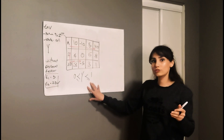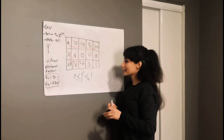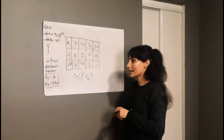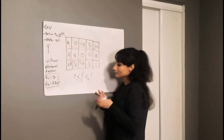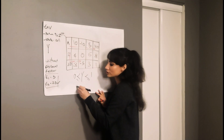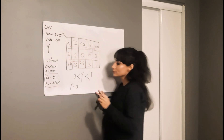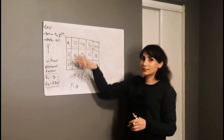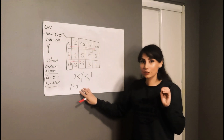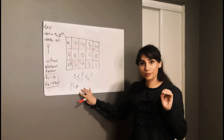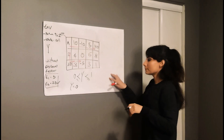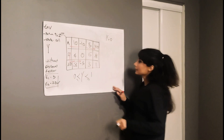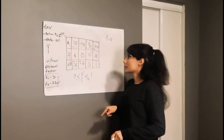Depending on how much risk you want to take, you can change your discount factor. If I say the chances of that reward being there are very low, I would choose a number close to 0. So let's say my gamma is equal to 0. When the gamma is equal to 0, your agent is going to be very short-sighted, and we'll see why.